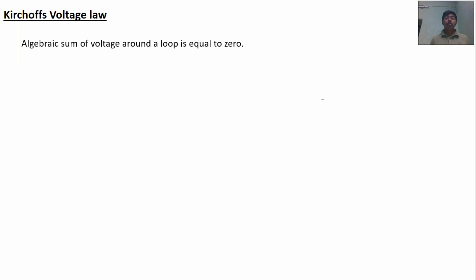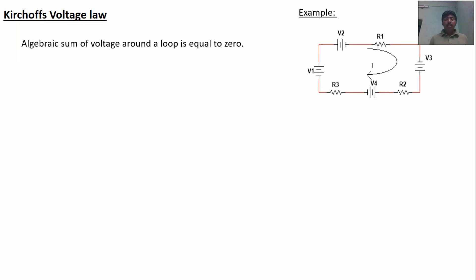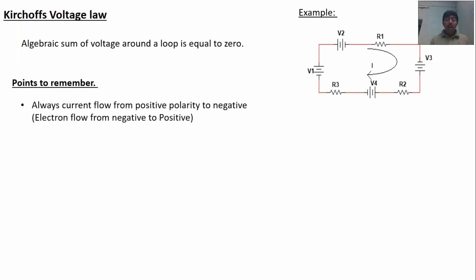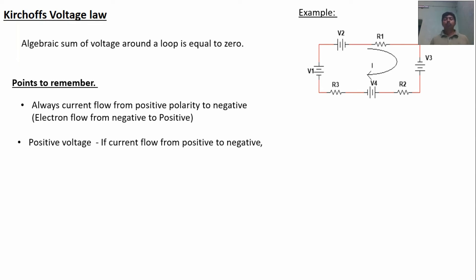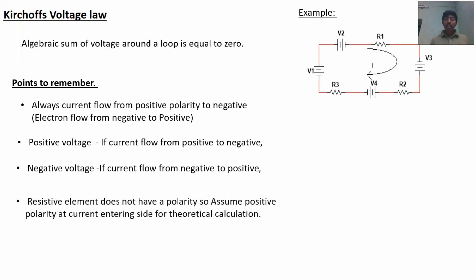Kirchhoff's voltage law states that the algebraic sum of voltages around a loop is equal to zero. Before applying KVL, you should remember some points. First point: current always flows from positive polarity to negative polarity, because electrons flow from negative to positive — electron flow and current flow are opposite. Point number 2 is positive voltage if current flows from positive to negative. Point number 4 is that a resistive element does not have a polarity, so assume positive polarity at the current-entering side for theoretical calculation. These 4 points you should remember for the calculation of Kirchhoff's voltage law.